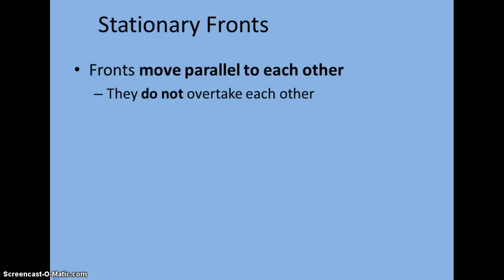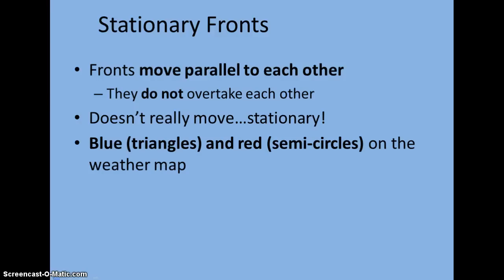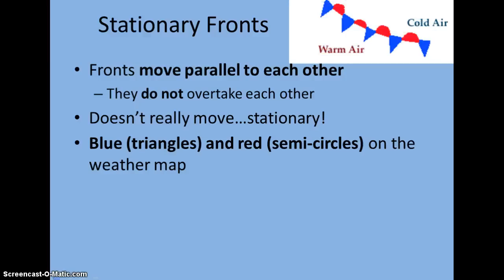Stationary fronts are when warm and cold air masses are moving parallel to one another — not overtaking each other — so they don't really move, hence the name stationary. On a weather map this is symbolized by alternating blue triangles and red semicircles on opposite sides of the line. On some weather maps you will see this as a pinkish-purple color depending on who created the map, but the biggest thing to remember is the symbol itself: triangles on one side of the line, semicircles on the other, alternating every other.